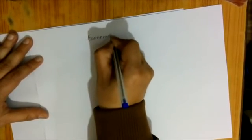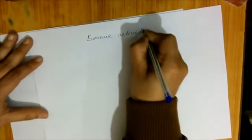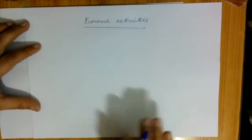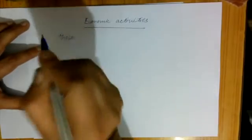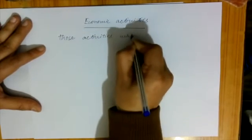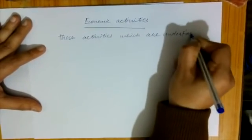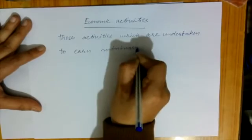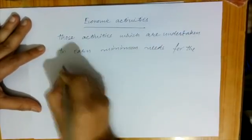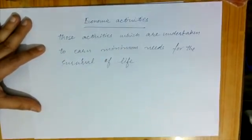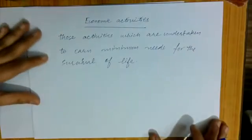Next, our main topic is Economic Activities. Economic activities are the activities that we do for living — activities undertaken to earn minimum needs for the survival of life. There are four main economic activities: Consumption, Production, Distribution, and Exchange.